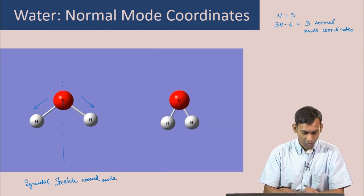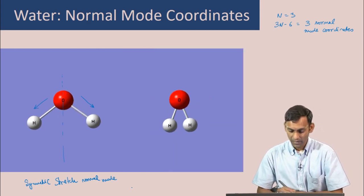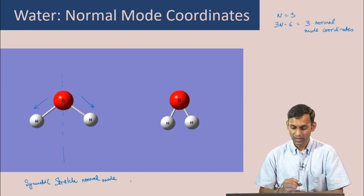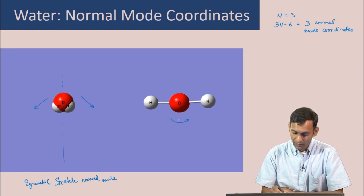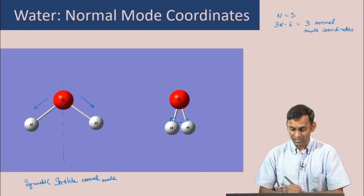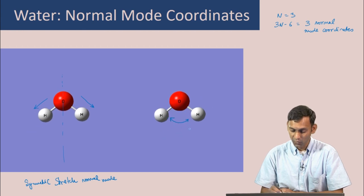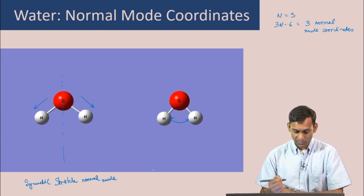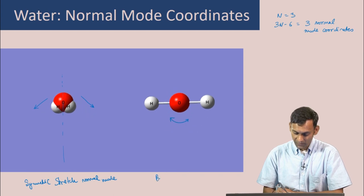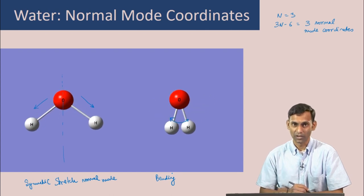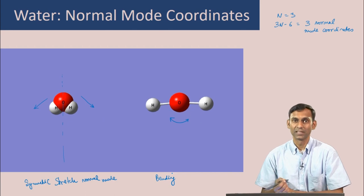Another normal mode of water involves the primary motion being a bending of the HOH molecule — in other words, the HOH angle keeps changing. As the hydrogen atoms move up, the oxygen moves down to conserve the center of mass. This is the bending motion, called the symmetric bend, because the C₂ᵥ symmetry of the water molecule continues to be conserved as the molecule bends.